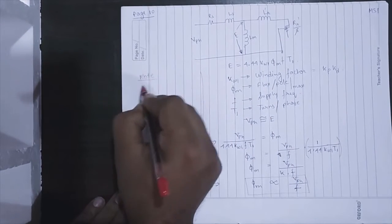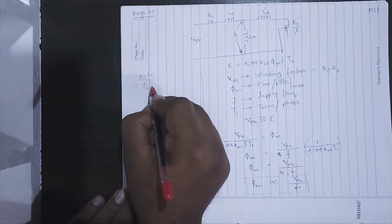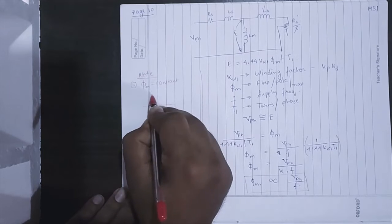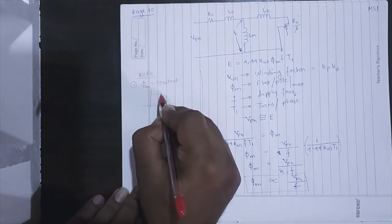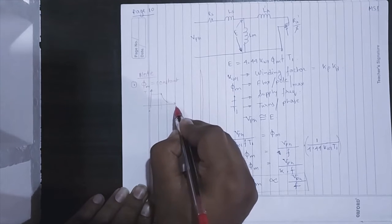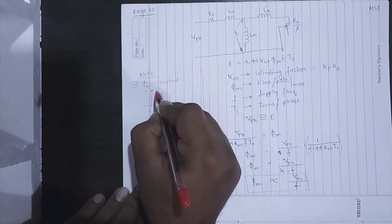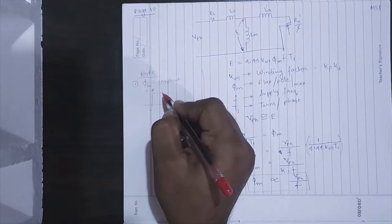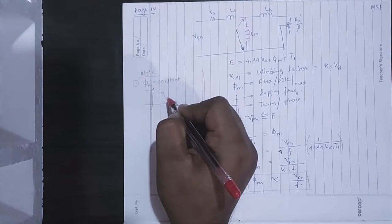From here what we get is that we have to keep phi_m constant. The flux should be kept constant till base speed. This is the base speed. Till that zone, the flattened zone, phi_m should be constant. After that we have to reduce phi_m to increase the speed, but that is above the base speed.